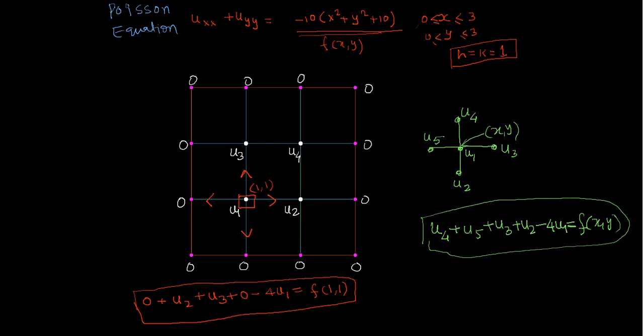So this is your first equation. And if you apply this on u2, we will get 0 plus 0 plus u4 plus u1 - so we will go to this side, this side, this side, and this side - minus 4u2 equals f(2,1).